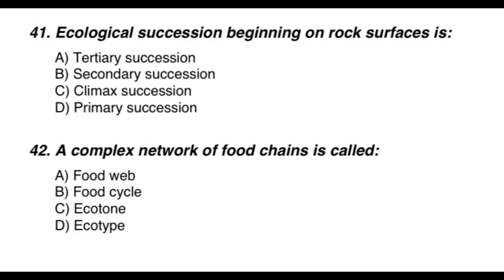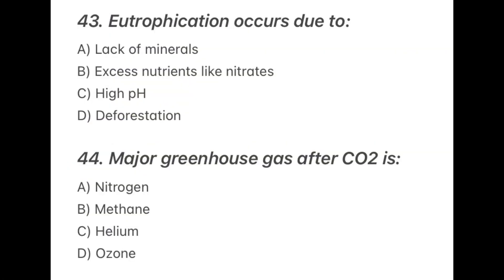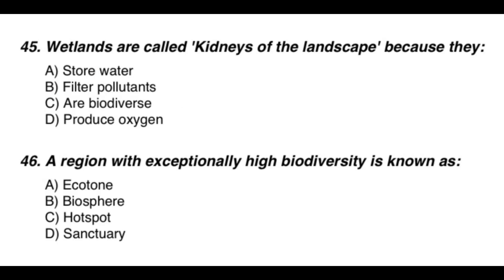Question 41: Ecological succession beginning on rock surfaces is — the correct option is D — primary succession. Question 42: A complex network of food chains is called — the correct option is A — food web. Question 43: Eutrophication occurs due to — the correct option is B — excess nutrients like nitrates. Question 44: The major greenhouse gas after CO₂ is — the correct option is B — methane.